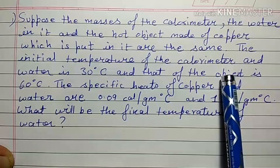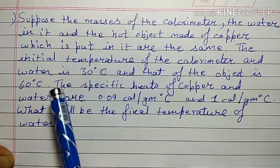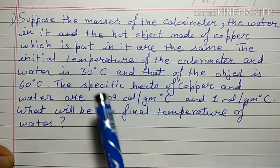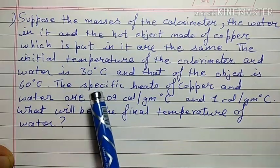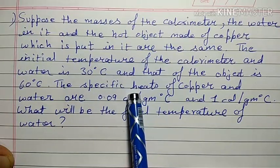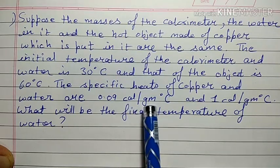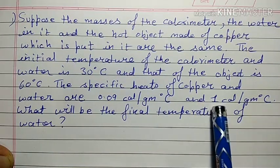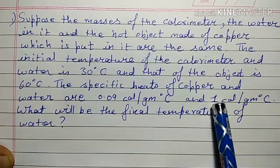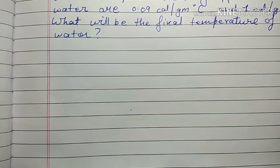The object is hotter than the calorimeter and water, so heat will always flow from the hotter object to the colder ones. Heat transfer keeps happening until all three objects reach the same temperature. The specific heats of copper and water are 0.09 cal/g°C and 1 cal/g°C respectively. We need to find the final temperature of the water.